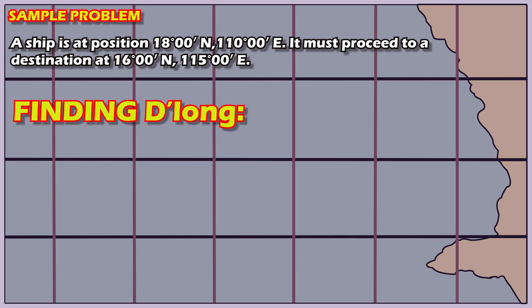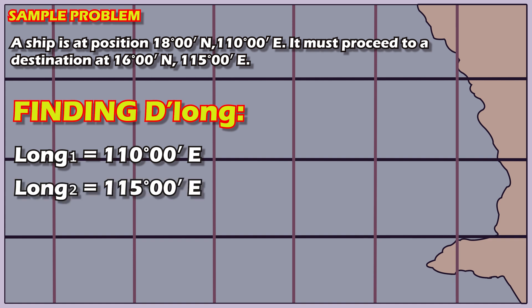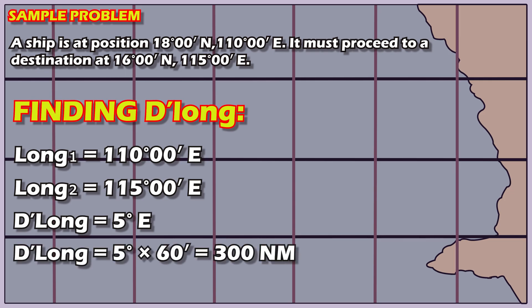Finding the difference of longitude. The first longitude is 110 degrees east. The second longitude is 115 degrees east. The difference of longitude is 5 degrees east. Now, let's convert that into nautical miles. 5 degrees multiplied by 60 equals 300 nautical miles.